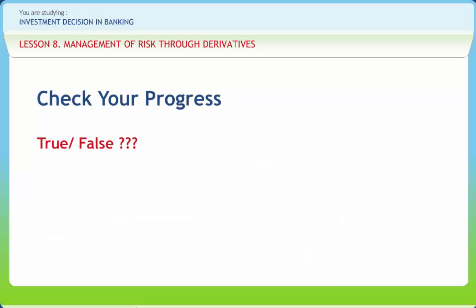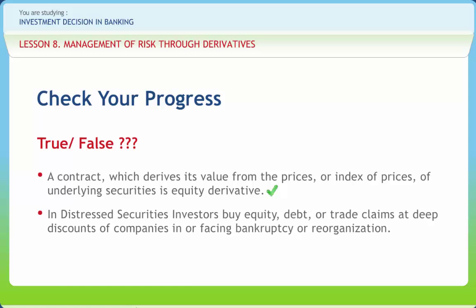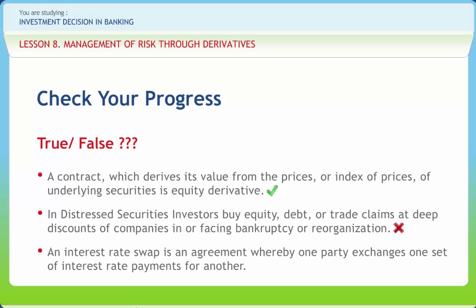Now let's see how much you have learned. State whether the following statements are true or false. Statement 1: A contract which derives its value from the prices or index of prices of underlying securities is an equity derivative. — True. Statement 2: In distressed securities, investors buy equity, debt, or trade claims at deep discounts of companies in or facing bankruptcy or reorganization. — False.